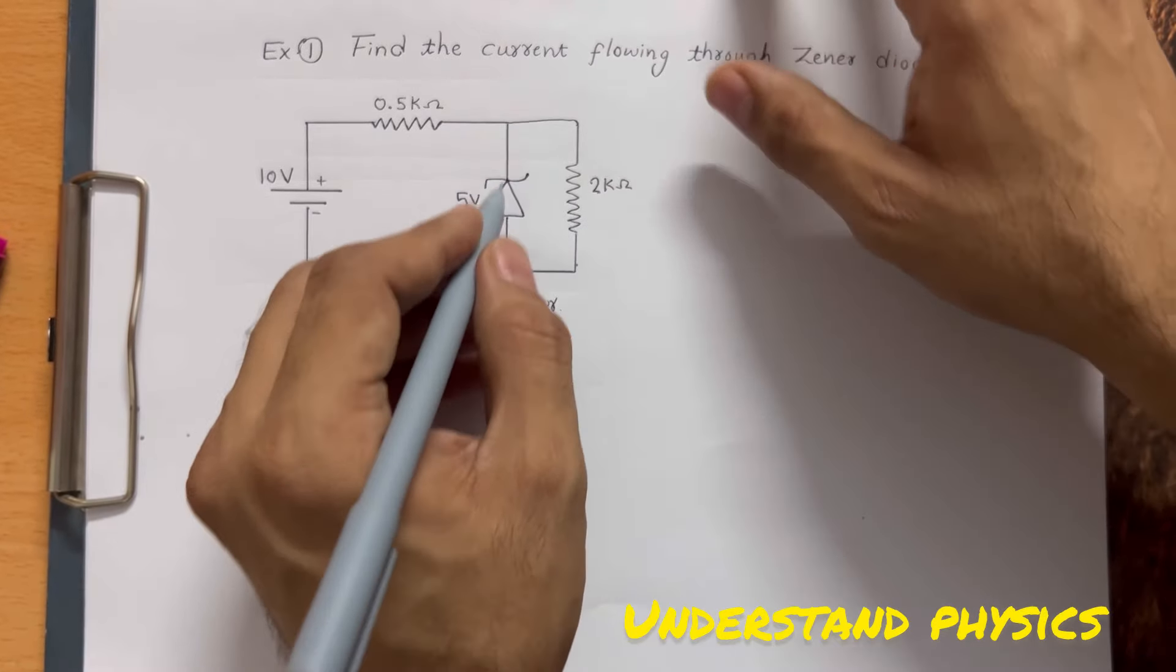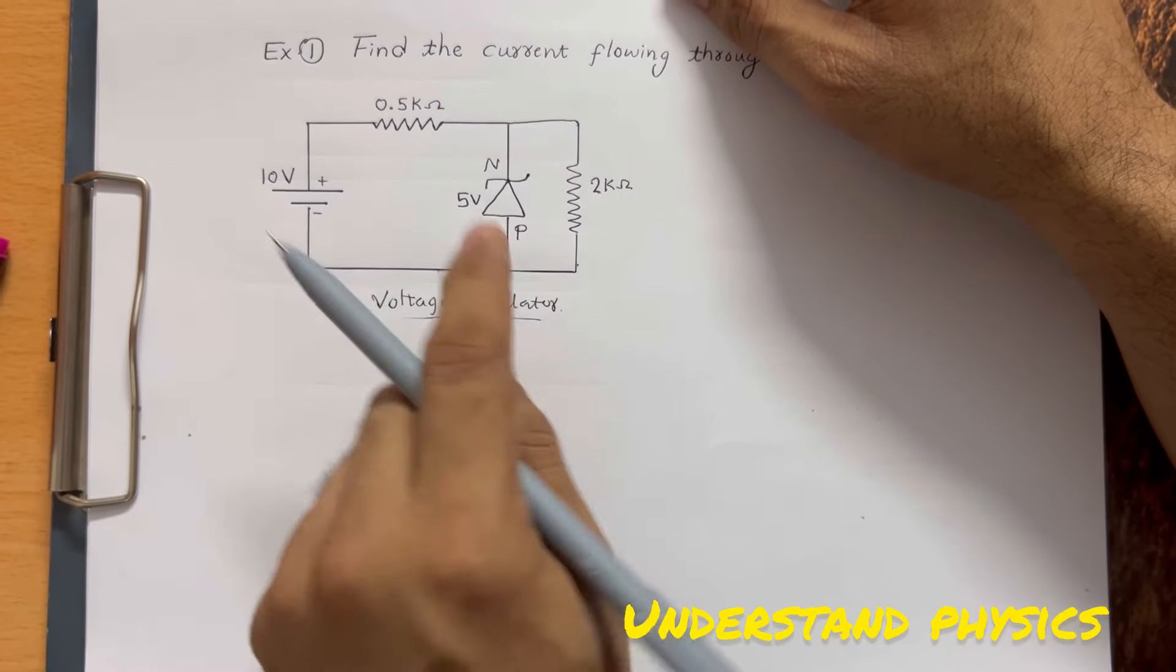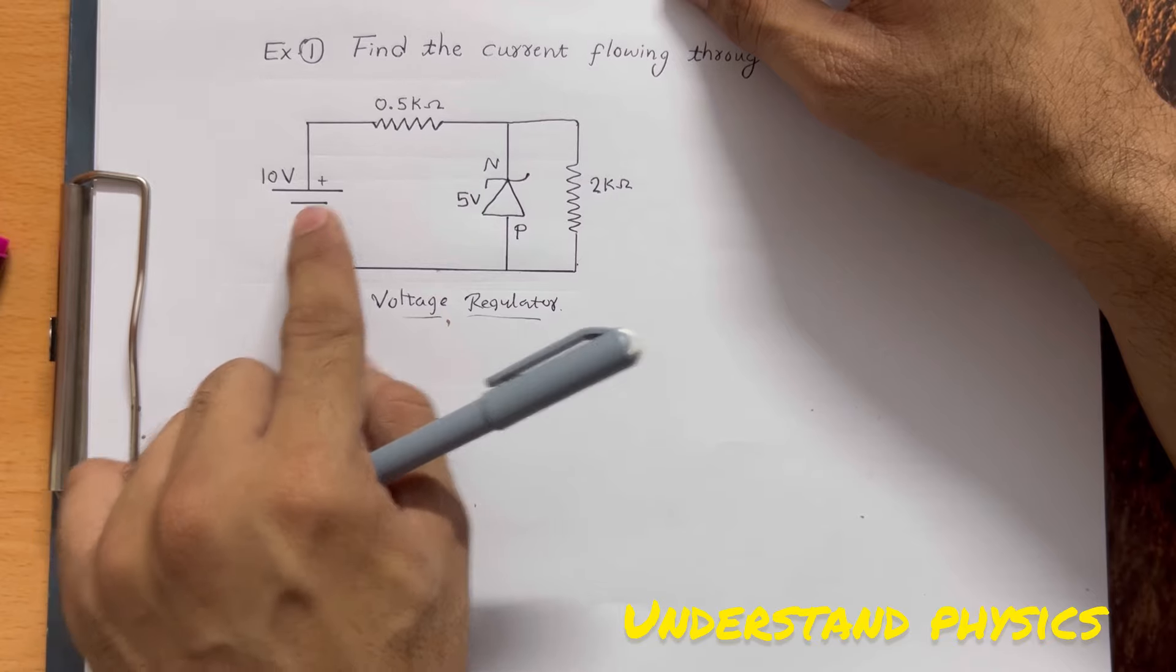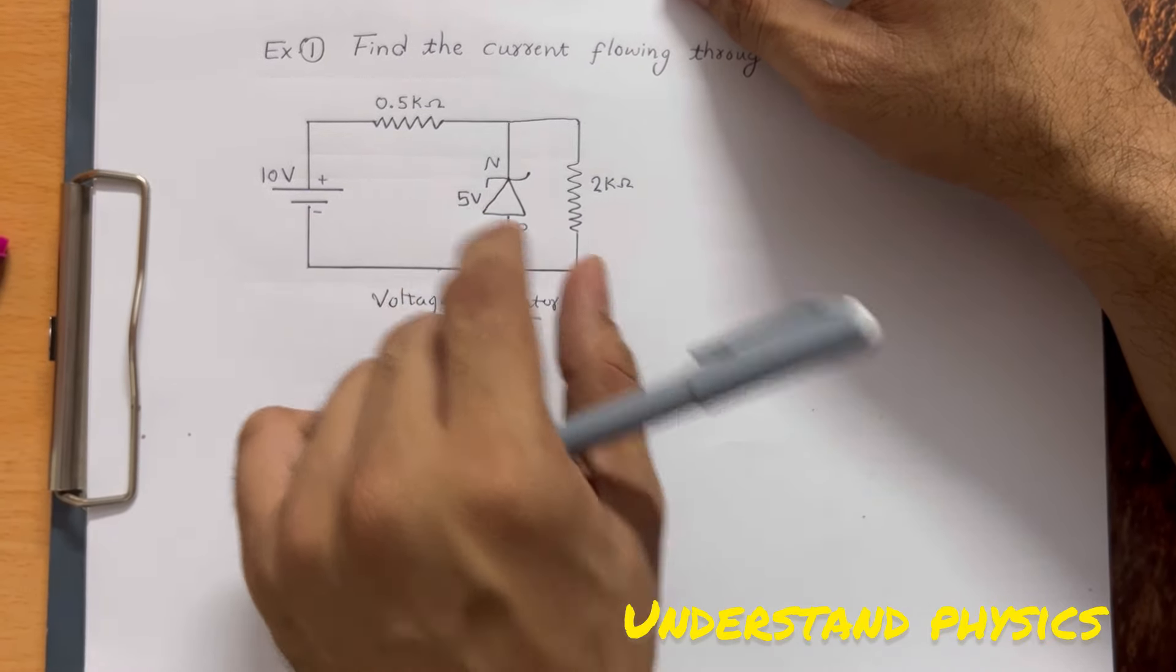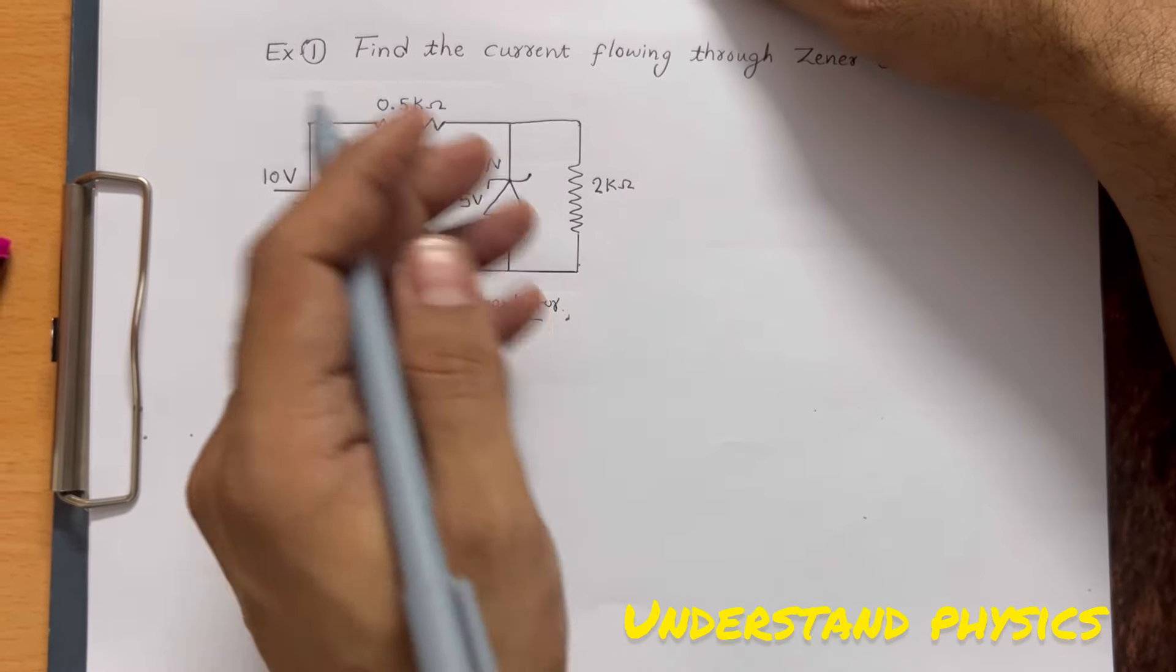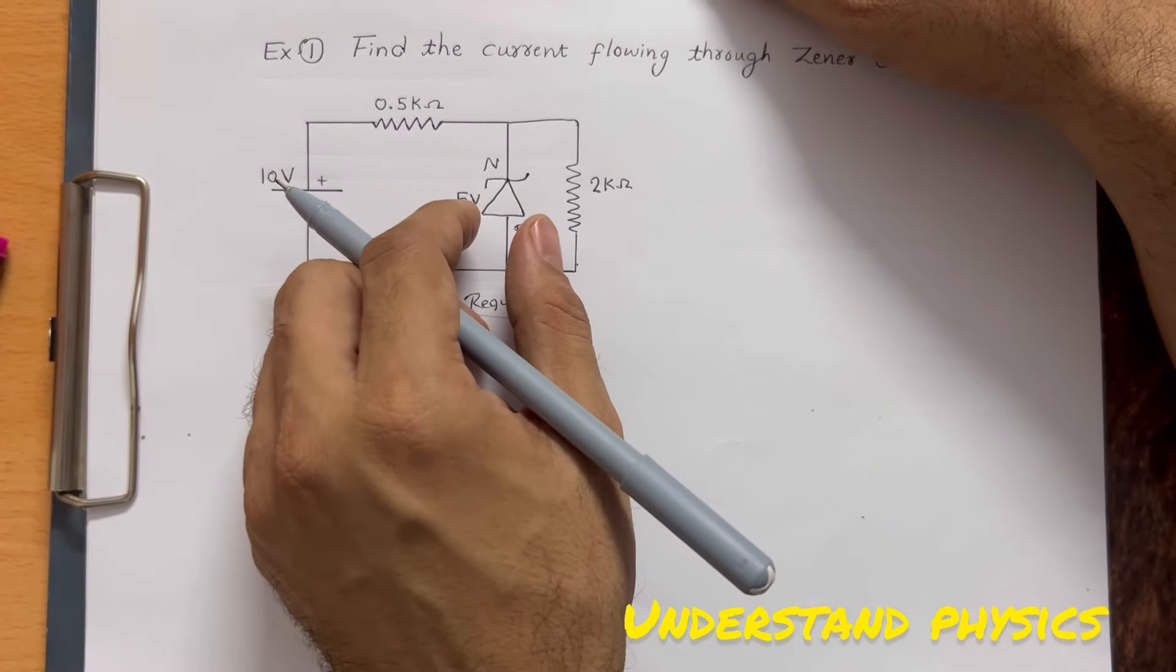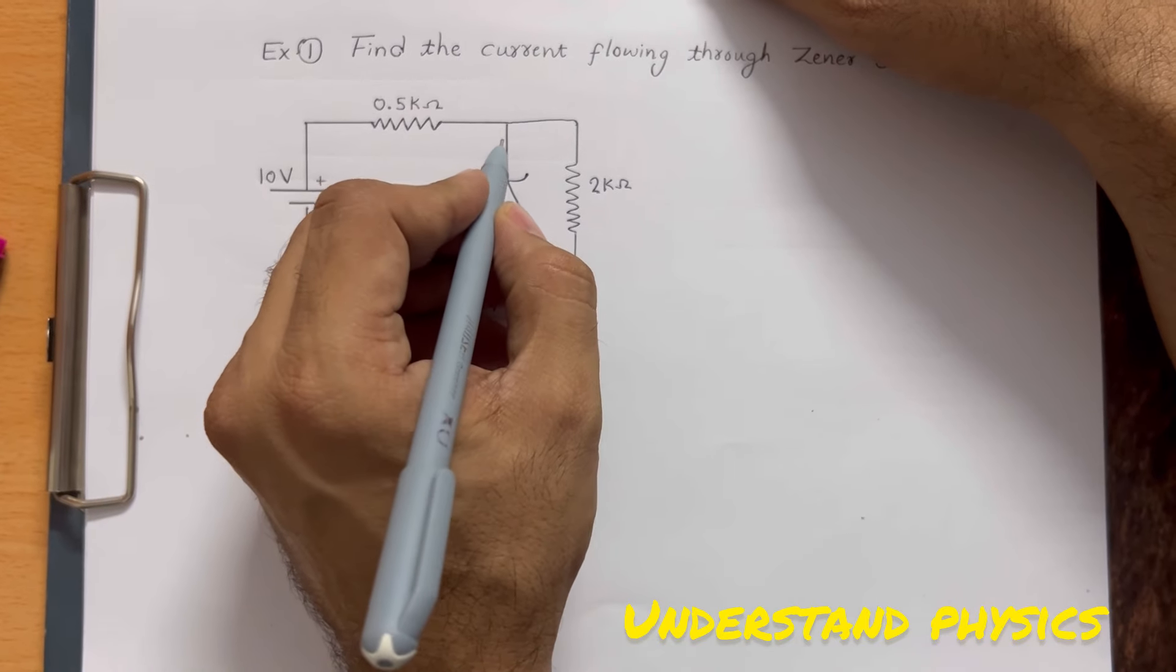Here we have to find the current through the Zener. If you observe carefully, the Zener is connected in reverse bias: the p-side is connected to the negative terminal, the n-side to the positive terminal. During reverse bias, if 5 volts is applied, we can assume the Zener is in the breakdown region. The Zener has already undergone breakdown.